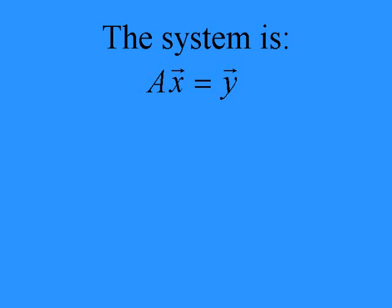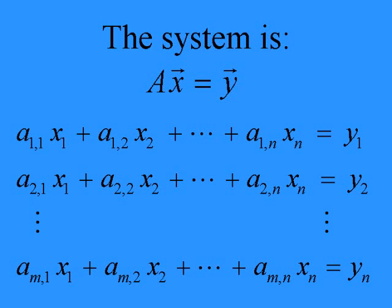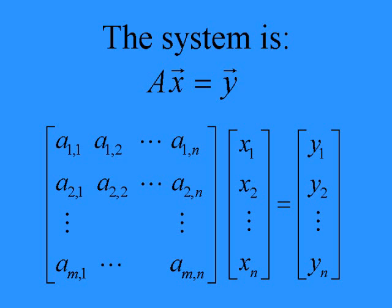Let's take a more detailed look at the system. Here the coefficients for the A matrix, the x vector, and the y vector are written out explicitly. And now things are grouped in their typical bracket presentation.